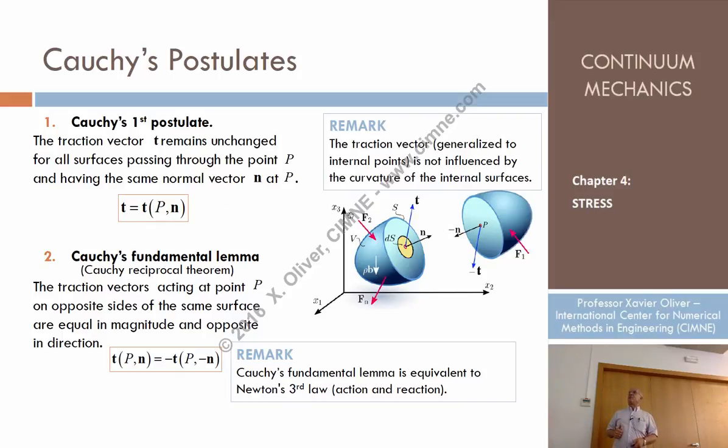But of course, if I keep the point constant and I change the orientation, the normal at this point, of course, the traction vector will change. The cutting will be split into different bodies and that will change. But it doesn't depend on the surface.